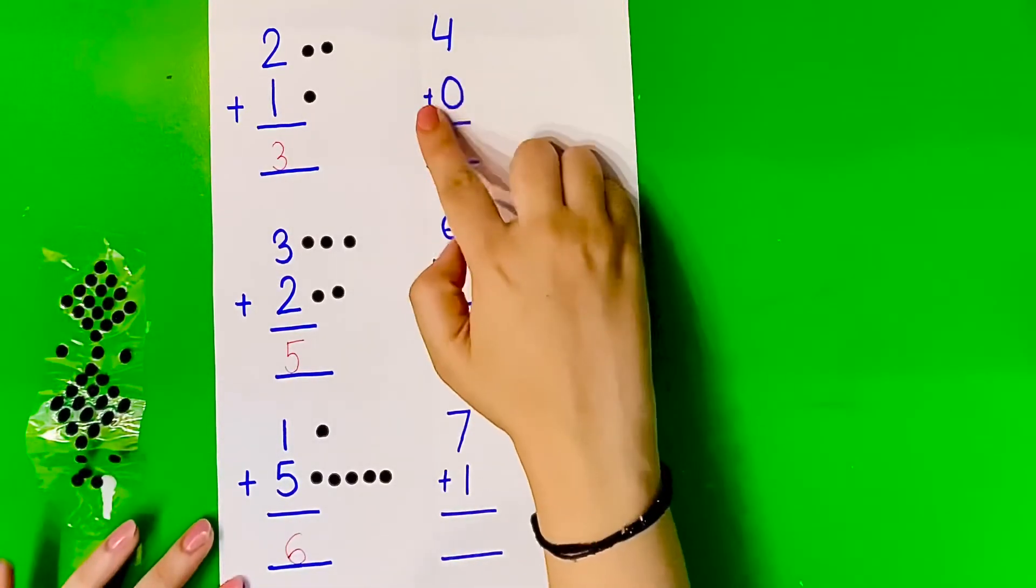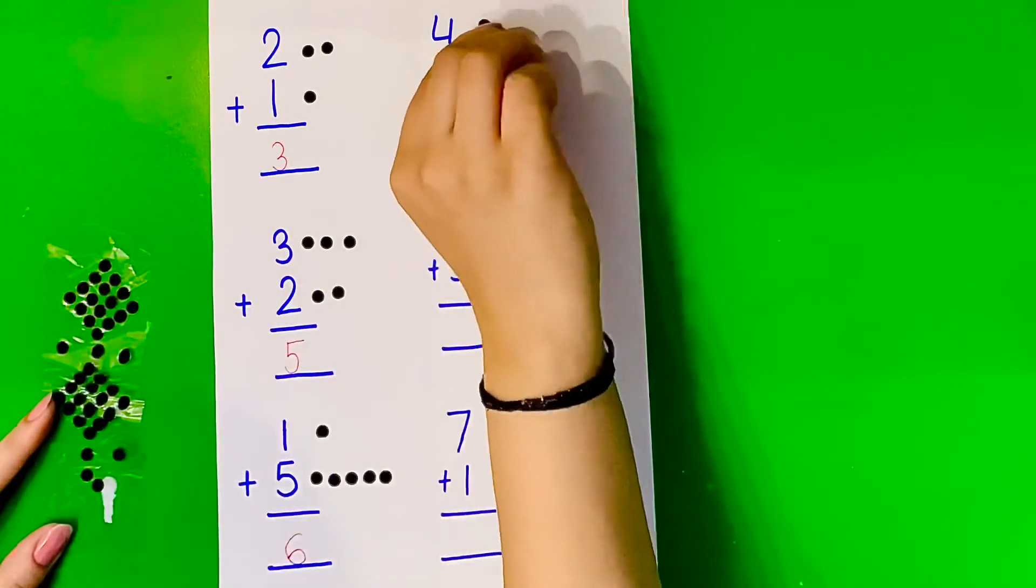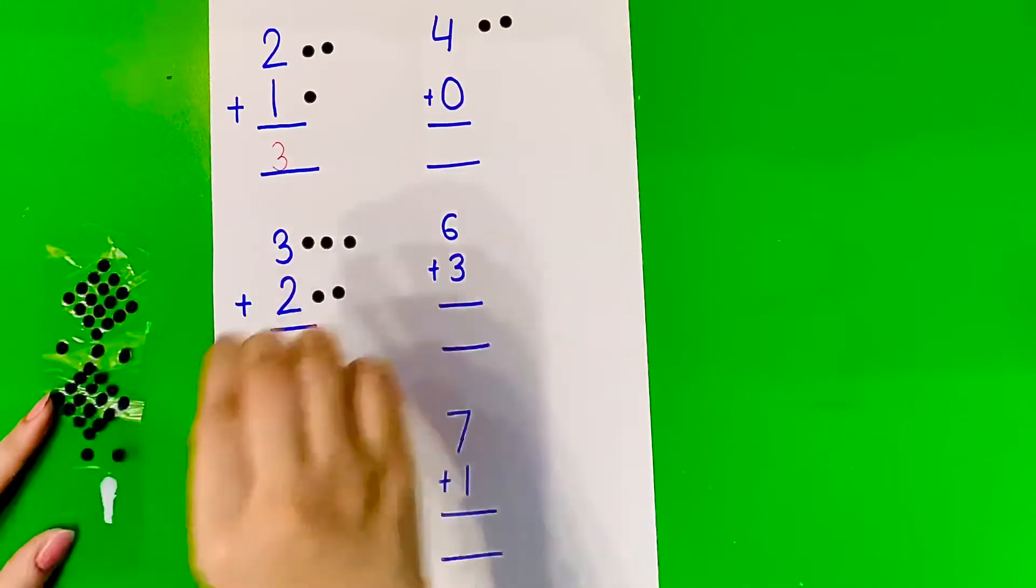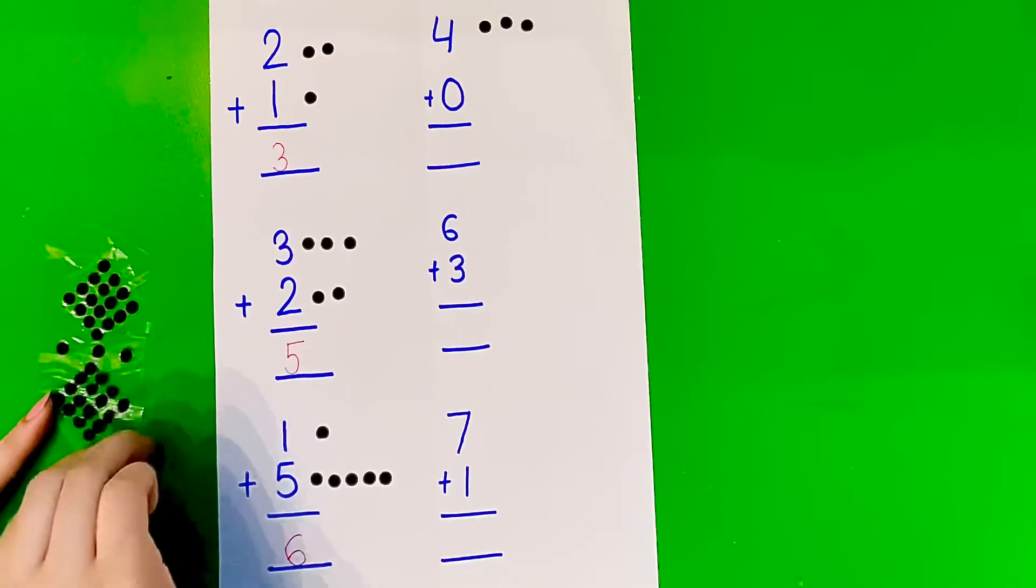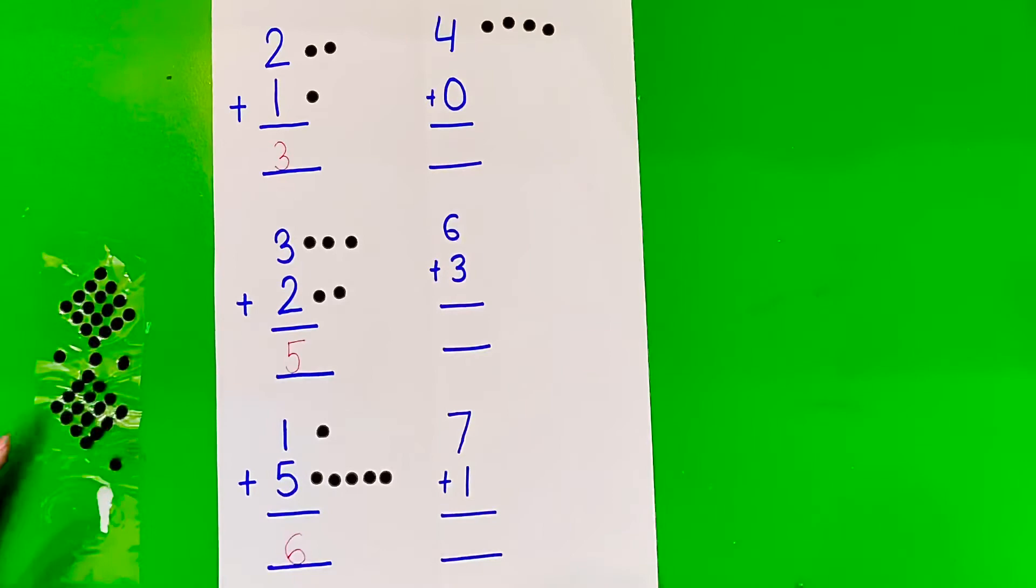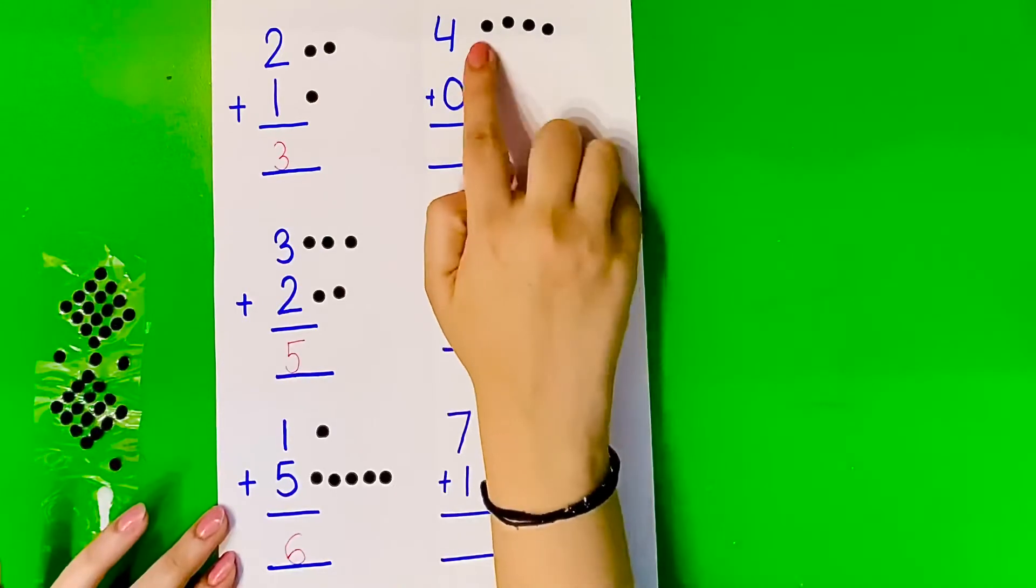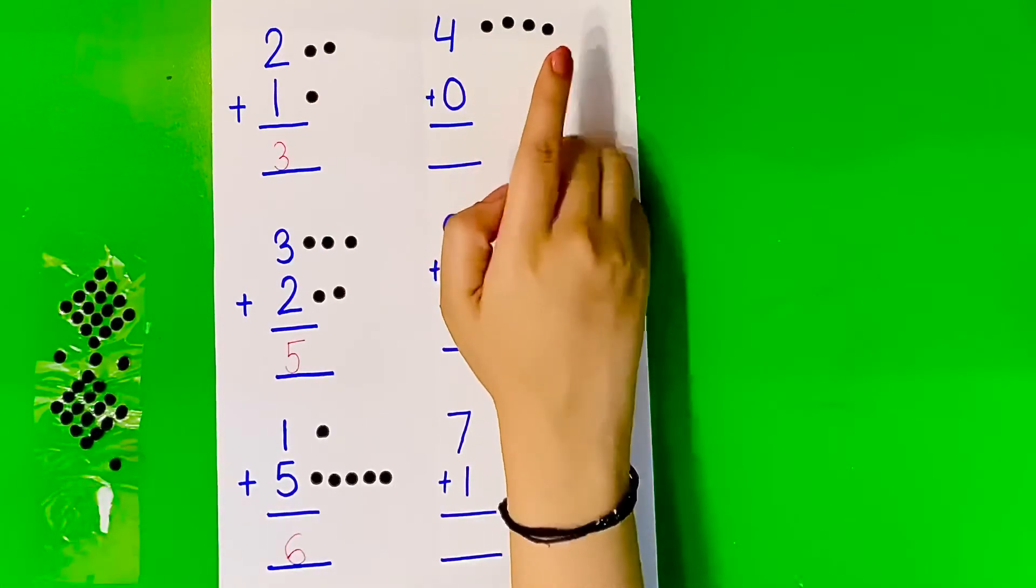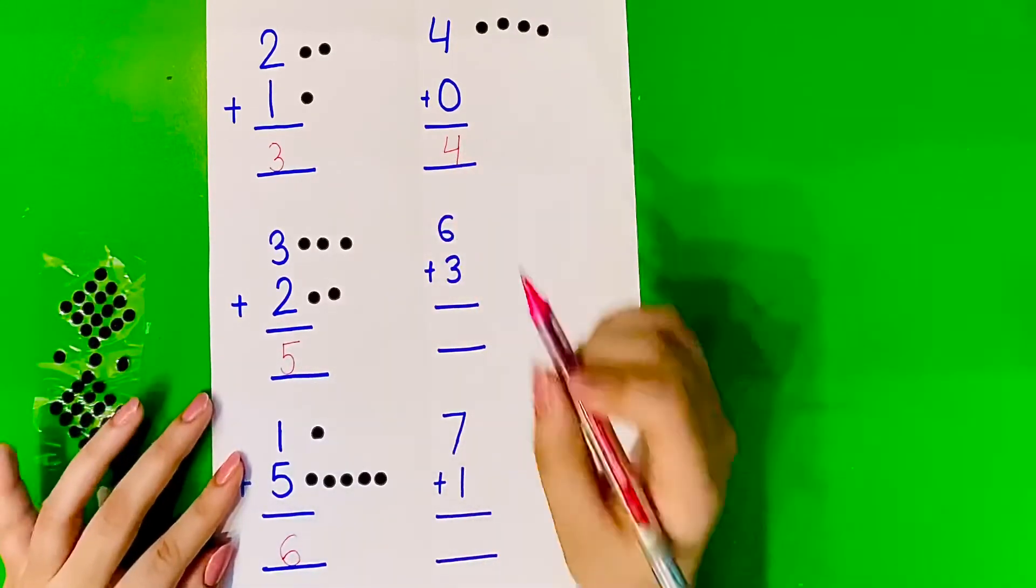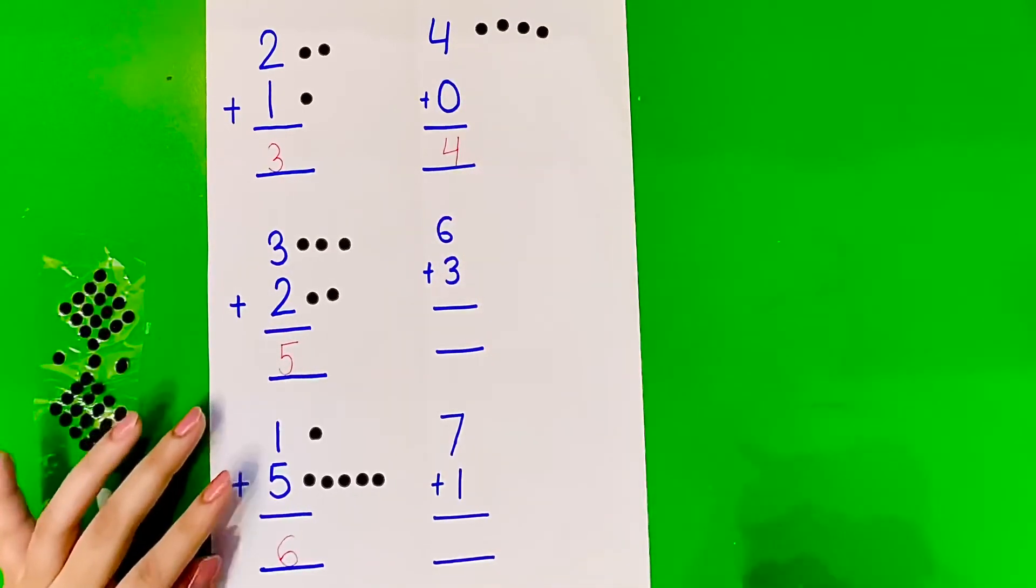Now next we have 4 plus 0. For 4, first we're going to paste 4 bindhies. Now 0 means nothing, so we're not going to paste anything here. Let us count: 1, 2, 3, 4. So 4 plus 0 is 4. We learned this before - when we add 0 to a number, we get the number itself.